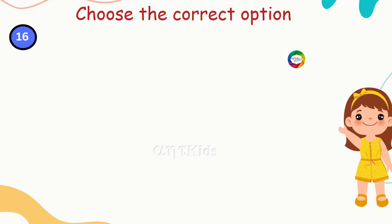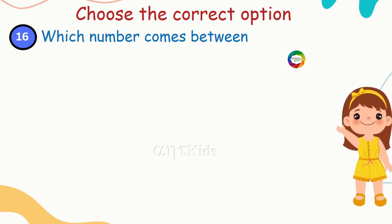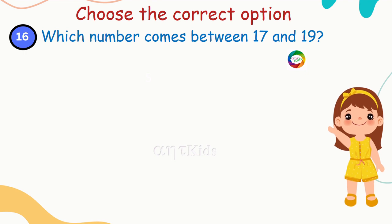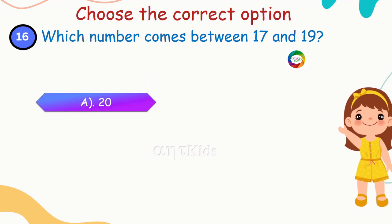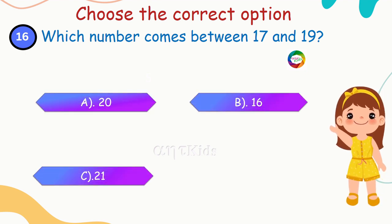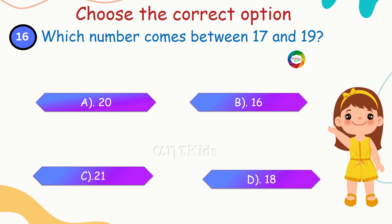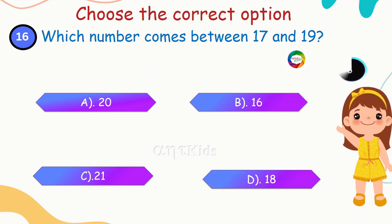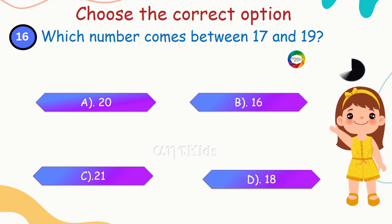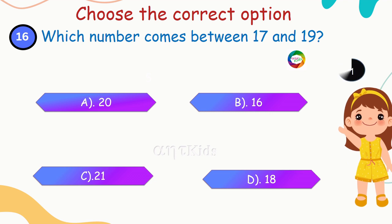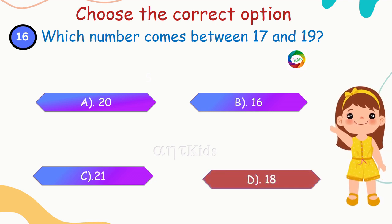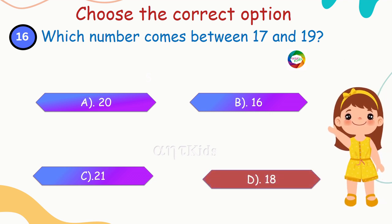Which number comes between 17 and 19? Options: 20, 16, 21, 18. Yes, 18 comes between 17 and 19.